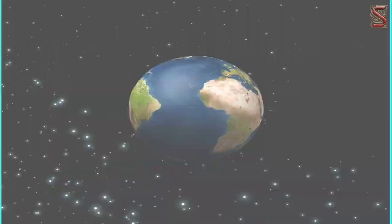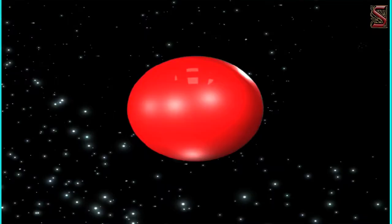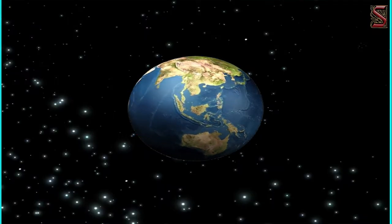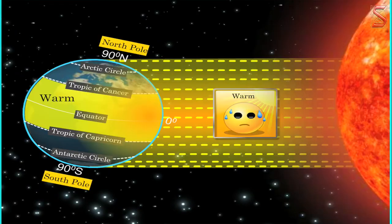We have studied in earlier classes how the spherical shape of the earth influences the distribution of heat on its surface. The spherical shape of the earth is responsible for the increased warmth of the regions close to the equator compared to the poles.